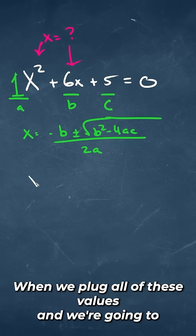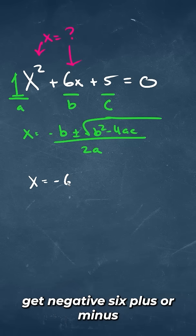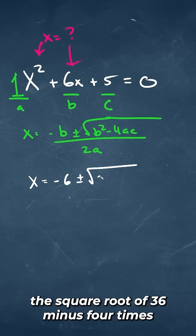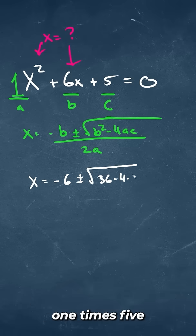When we plug all of these values in, we're going to get negative 6 plus or minus the square root of 36 minus 4 times 1 times 5, all over 2 times 1.